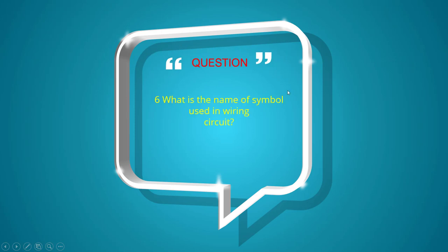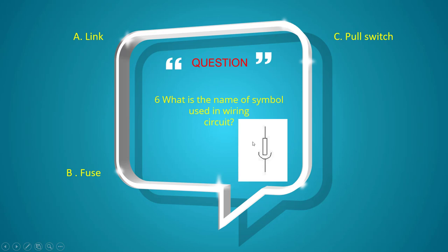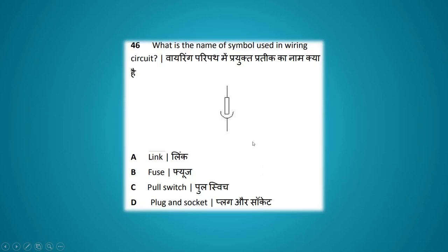What is the name of the electrical symbol used in the wiring circuit? Options: link, fuse, pull switch, plug and socket. The answer is plug and socket.